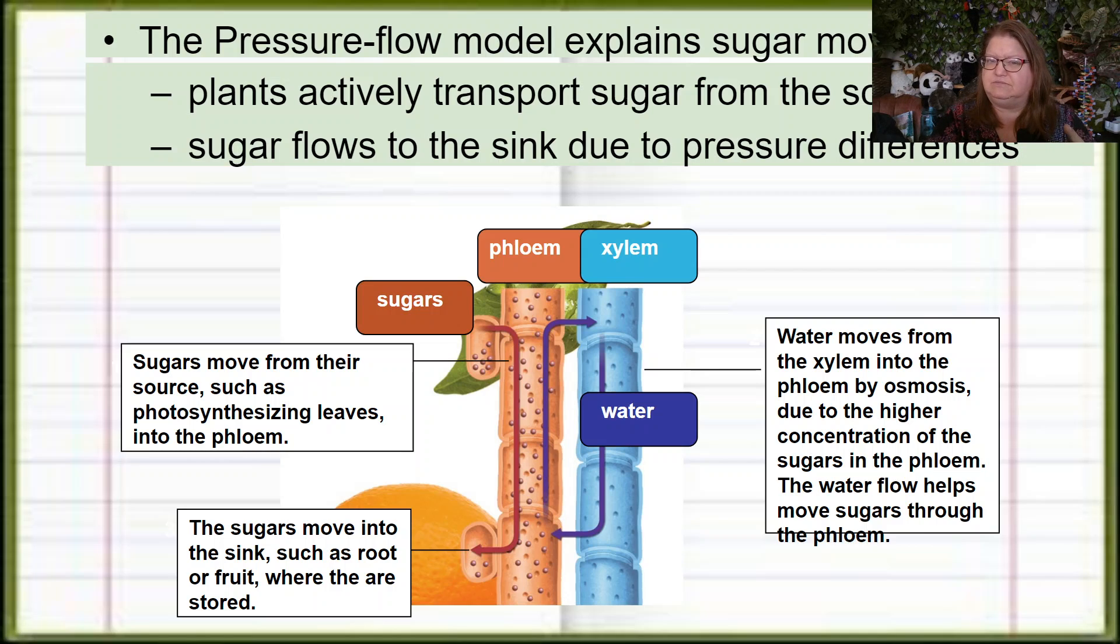But what I want you to think about is right now in early spring there are no leaves on the trees. So how are they getting the energy to build their leaves? They're not photosynthesizing yet, they don't have any leaves. The answer is they stored their sugars down at the roots over the winter. So for that time period, the source of the sugars would be the roots.